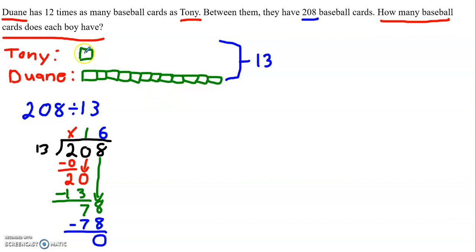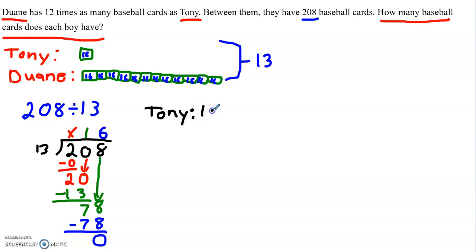Each one of these boxes is worth 16 from my division. Now how does that help me? I can easily do a quick multiplication to figure it out. Let's look at Tony — Tony has one box. If that box is worth 16, I just do one times 16, which gives me 16. So Tony has 16 cards.